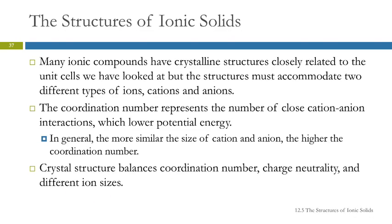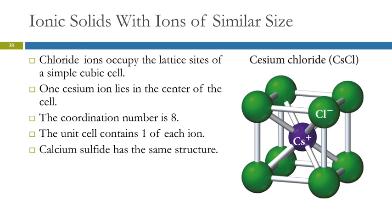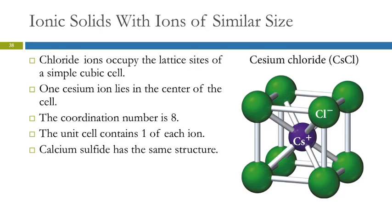The first scenario is where you have an ionic solid with ions of similar sizes. An example is cesium chloride. The cesium and chloride ions are similar in size, so the chloride ions occupy the lattice points of a simple cubic unit cell, and then one cesium atom fits into the center of that.